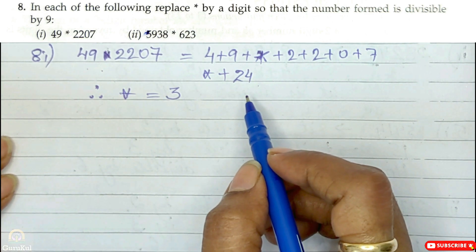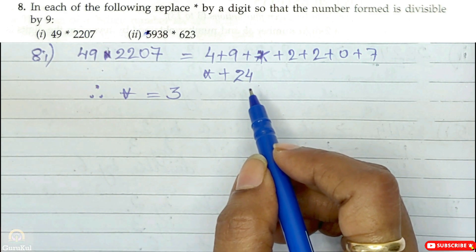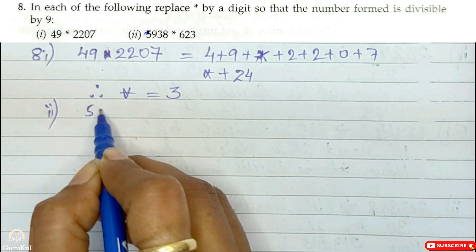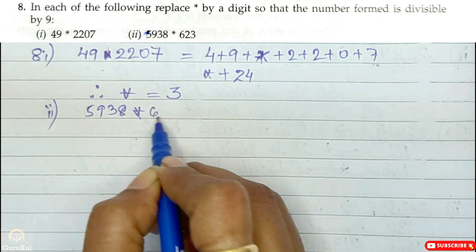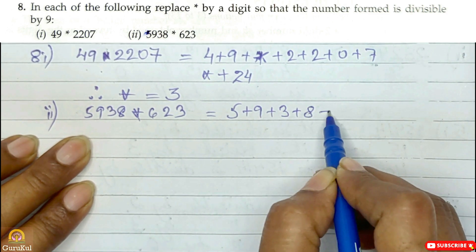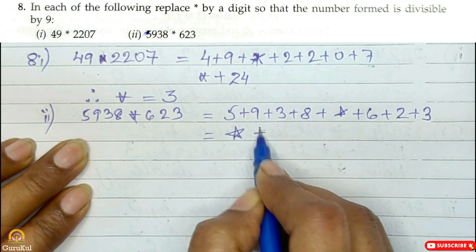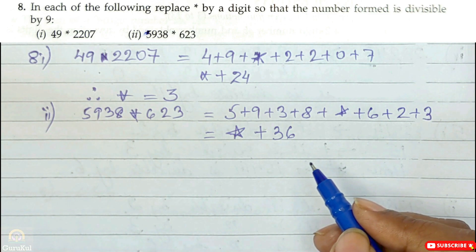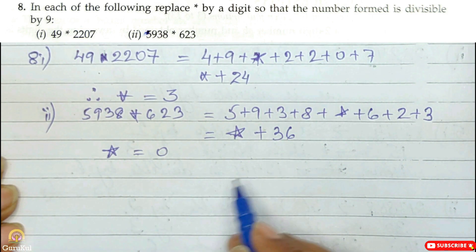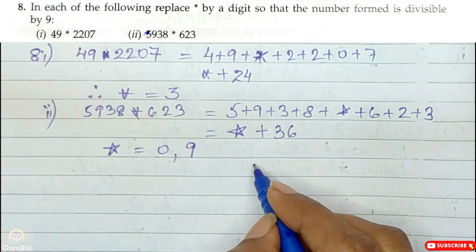24 plus 3 gives us 27, which is divisible by 9. There are no further digits since beyond this the digits would become double-digit, so the value of star is 3. Now the second part of question number 8: the number is 5938*623. Finding the sum: 5 plus 9 plus 3 plus 8 plus star plus 6 plus 2 plus 3, giving us star plus 36.